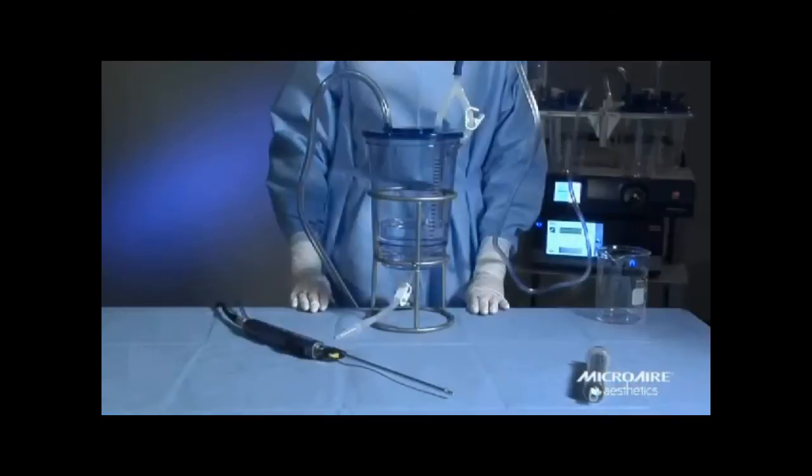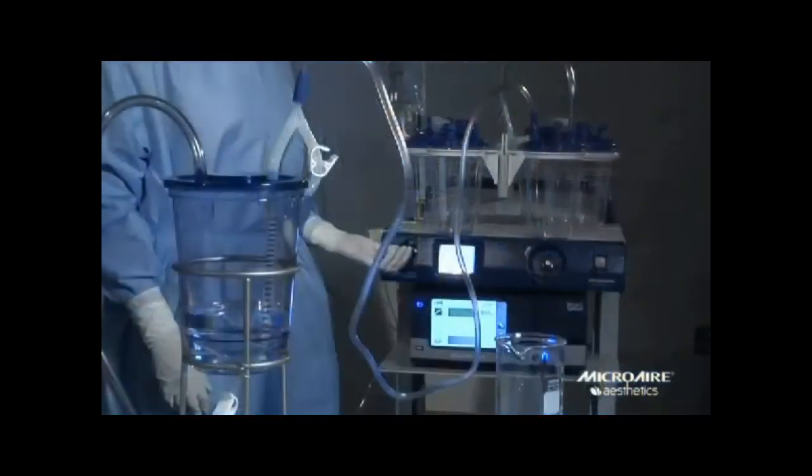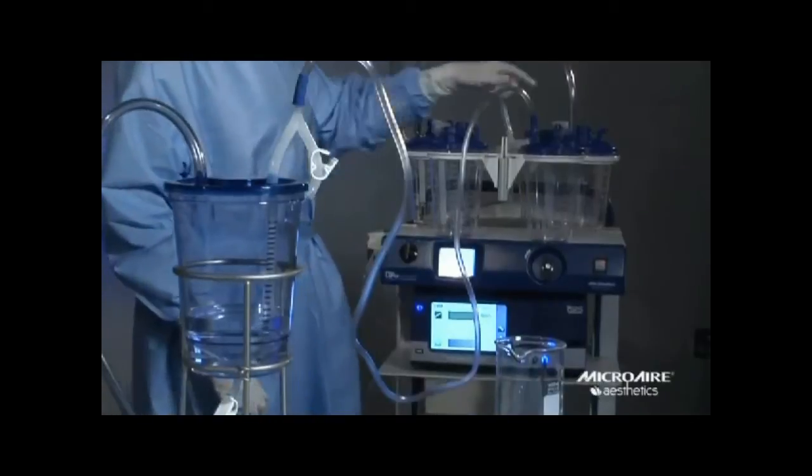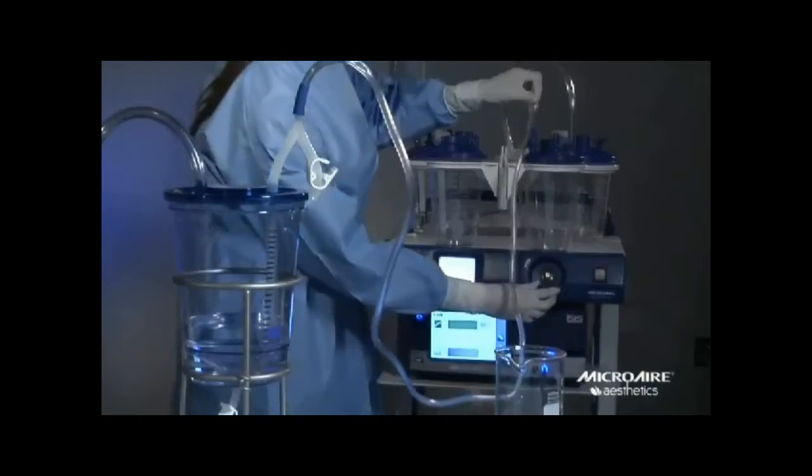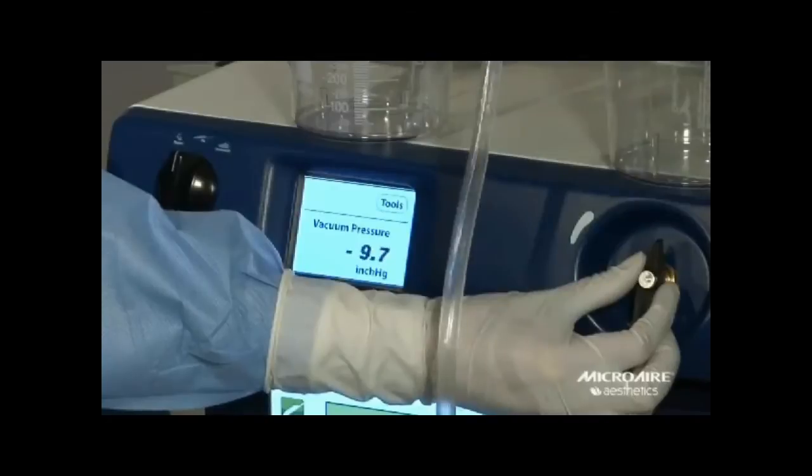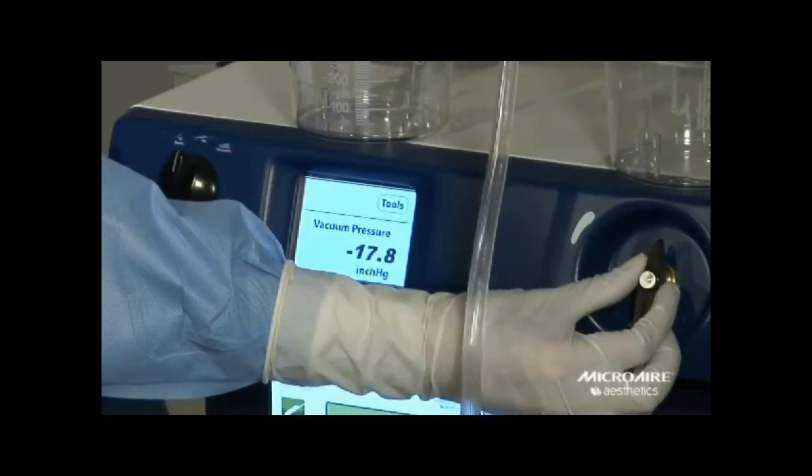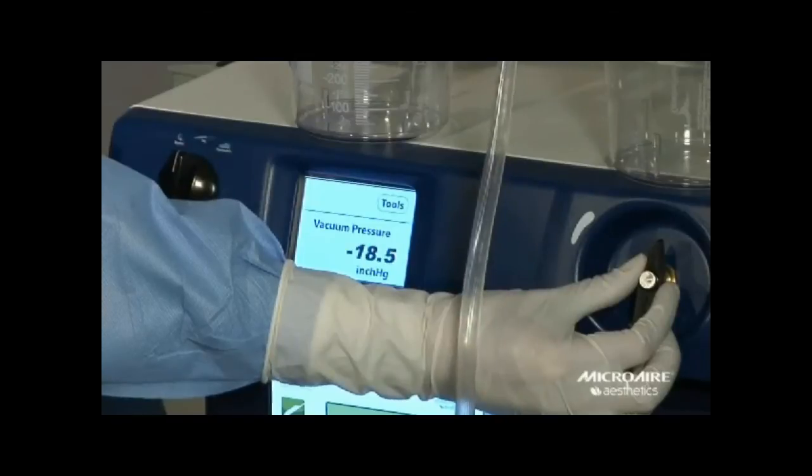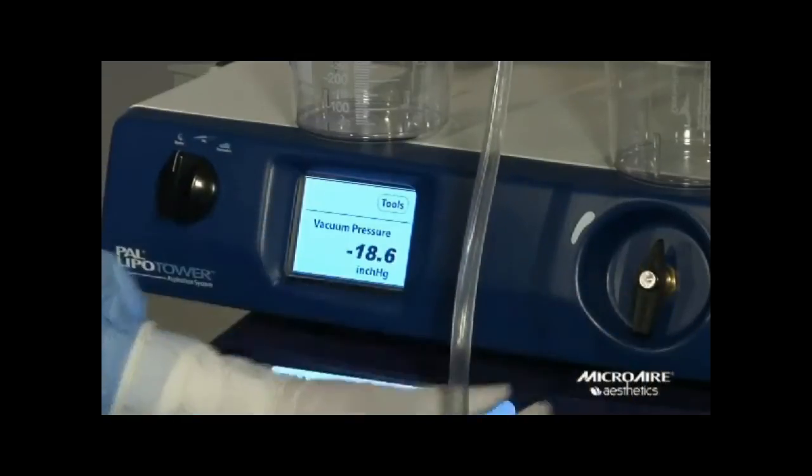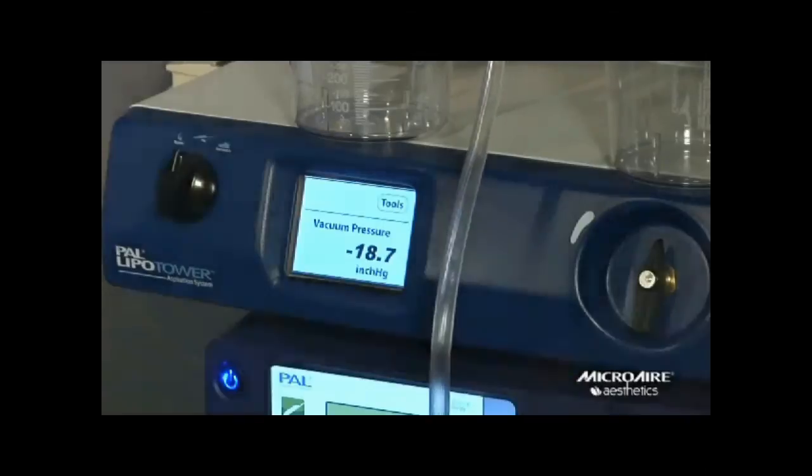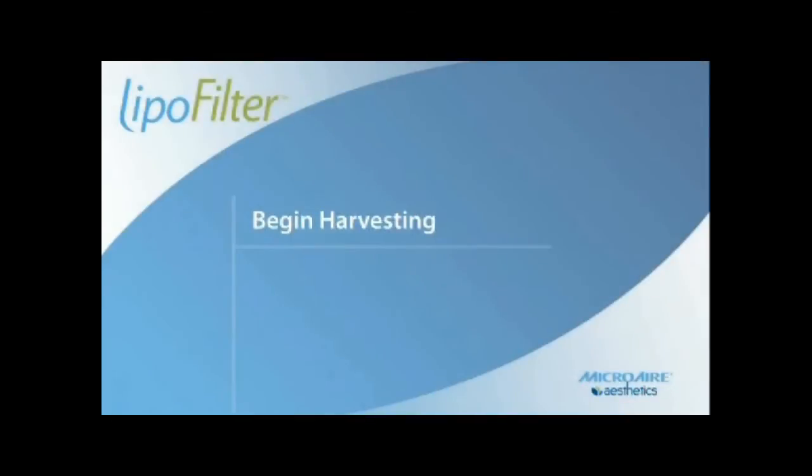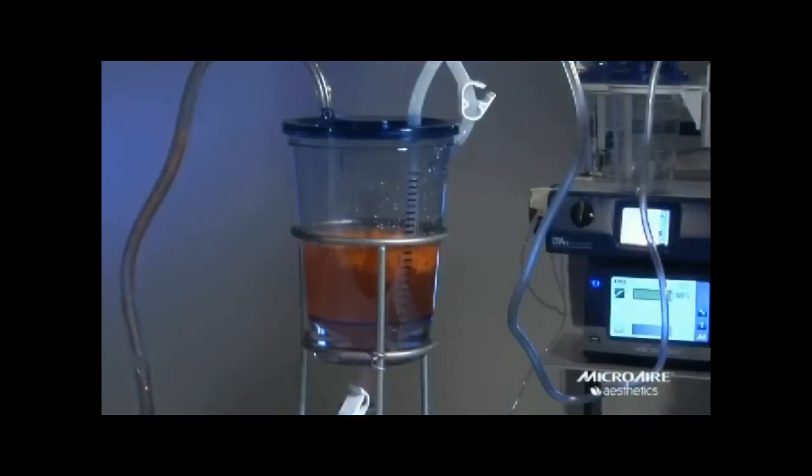The next step is very important. You are going to set your harvesting vacuum level. First crimp your harvest tubing. This closes the system. With your vacuum level turned to the lowest setting, turn on your aspirator and bring the vacuum level up to between 15 and 20 inches of mercury. You are now ready to harvest.